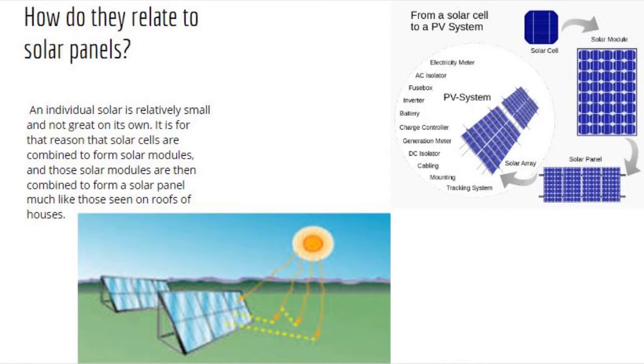But do you know the difference between a solar panel and a solar cell? Well, an individual solar cell is relatively small and therefore not very great on its own. But it is for that reason that solar cells are combined to form solar modules, and the solar modules are then combined to make solar panels.